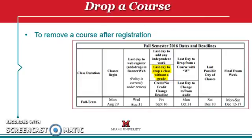To drop a course is to remove a course after registration. If a student wants to drop a course without it showing in their academic history, the student must drop the class by the drop date noted on the academic calendar. If a student continues attending class after the noted drop date, the class will show on the student's academic record.